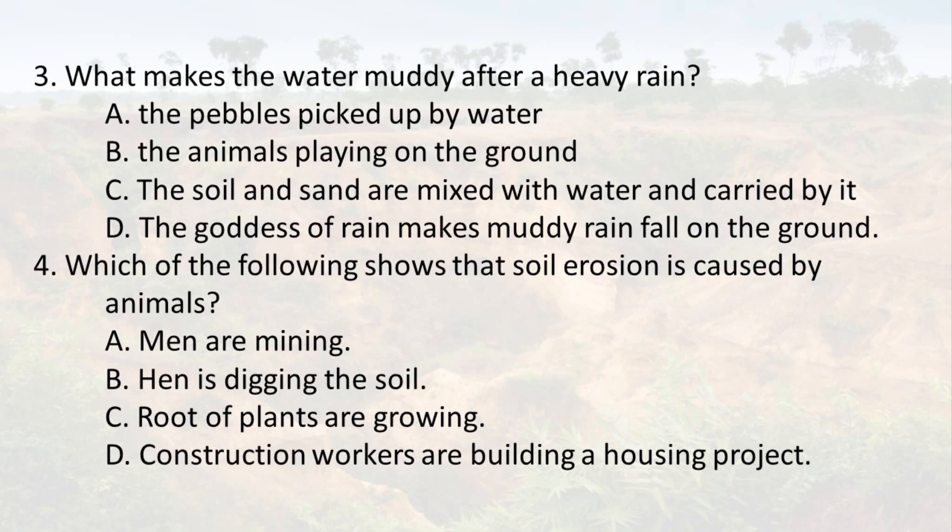4. Which of the following shows that soil erosion is caused by animals? A. Men are mining. B. A hen is digging the soil. C. Roots of plants are growing. D. Construction workers are building a housing project.